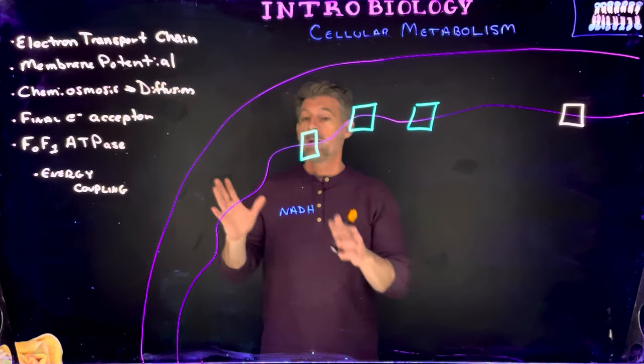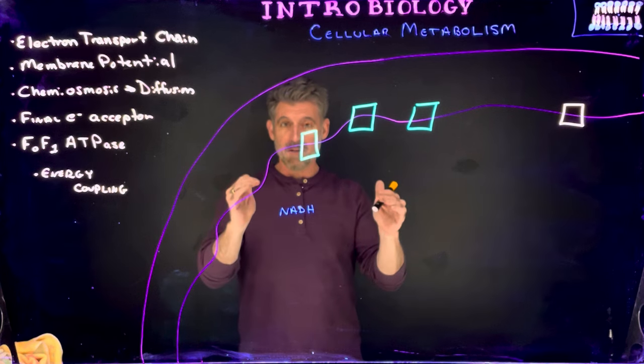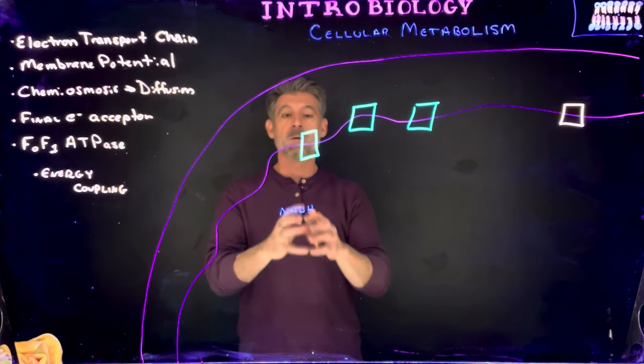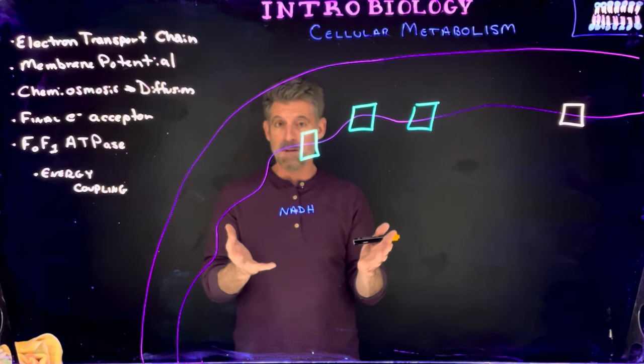Okay, so now what we're going to do is, if we finished glycolysis, pyruvate oxidation, and the citric acid cycle, we've mostly produced NADH molecules carrying electrons, but not really much ATP.